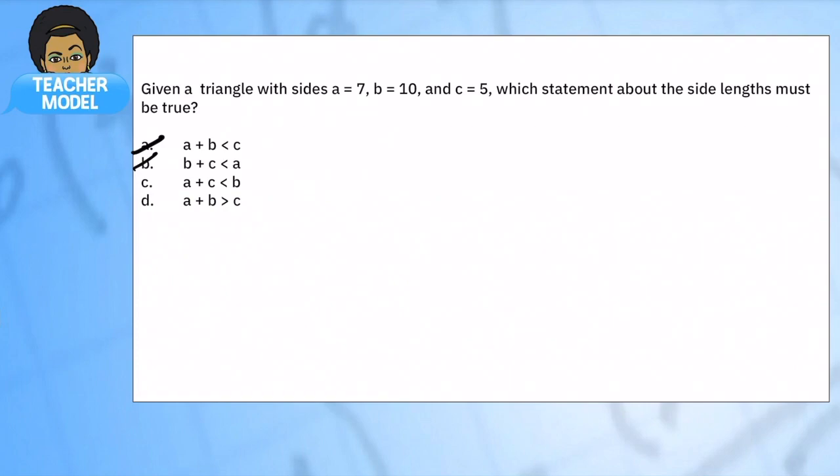So the only one that was satisfied is a + b is bigger than c. And we could actually test that: 7 plus 10 is bigger than 5. So this is a statement that would help us prove whether or not our three sides would make a triangle.